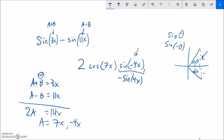So this is like 2 times cosine 7x times negative sine 4x. So it's the same as negative 2, 2 times negative 1, cosine of 7x times sine of 4x.